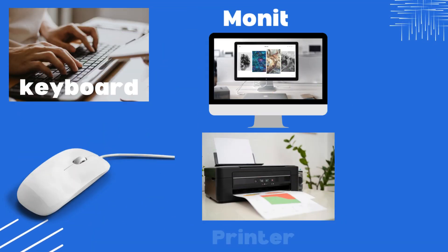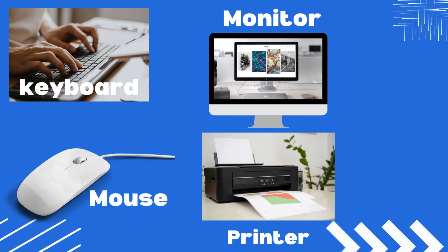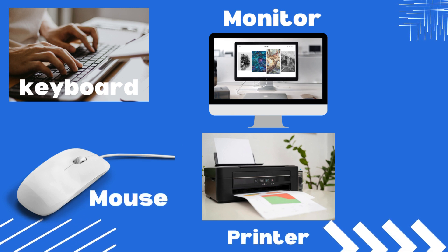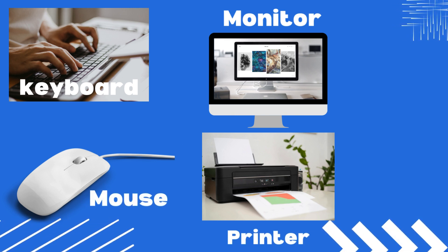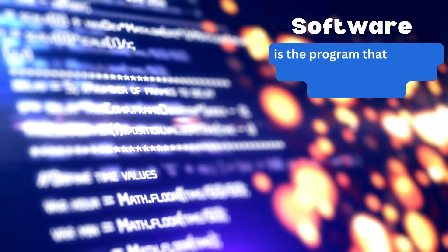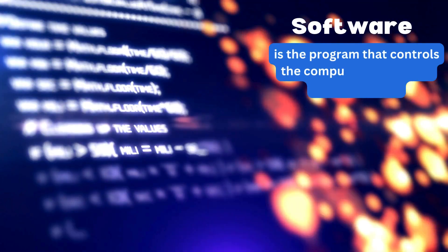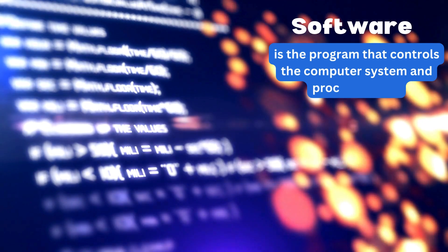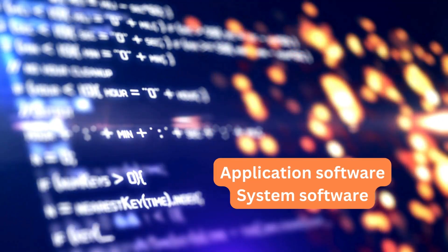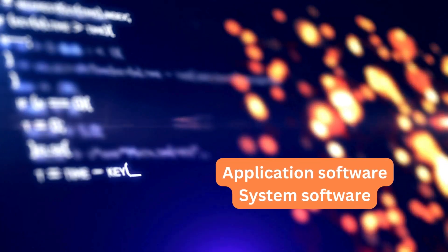Some examples of external hardware are a keyboard, mouse, printer, and monitor. Now let's look at software and its categories. Software is the program that controls the computer system and processes data. Software falls into two categories: applications and systems.